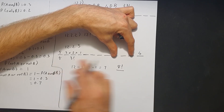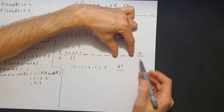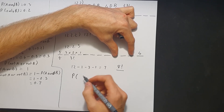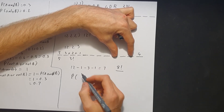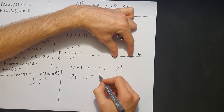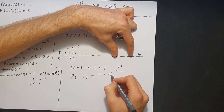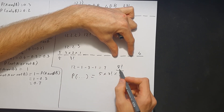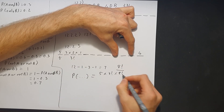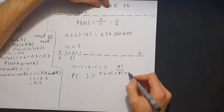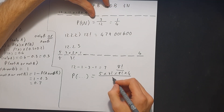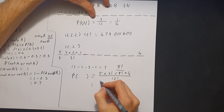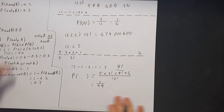So the probability of this specific outcome equals: 5 possibilities for the first poetry book, multiplied by 3 factorial for the novel arrangements, multiplied by 8 factorial for the remaining positions, multiplied by 4 for the drama book in the last position, all divided by the total 12 factorial. Plugging that into a calculator gives a probability of 1 over 99.